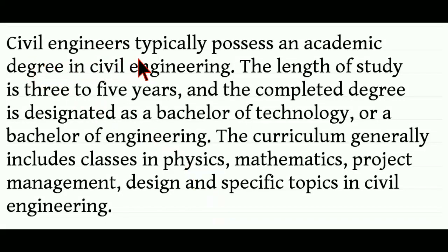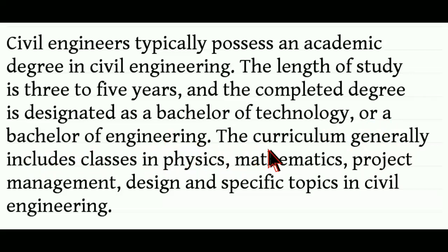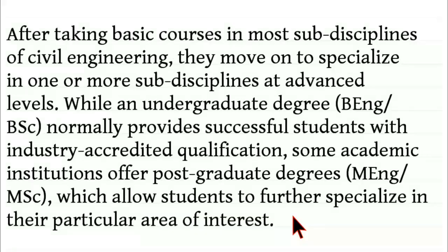Civil engineers typically possess an academic degree in civil engineering. The length of study is three to five years generally, and the completed degree is designated as a Bachelor of Technology or a Bachelor of Engineering. The curriculum generally includes classes in physics, mathematics, project management, design and specific topics in civil engineering. After taking basic courses in most sub-disciplines, they move on to specialize in one or more sub-disciplines at advanced levels.